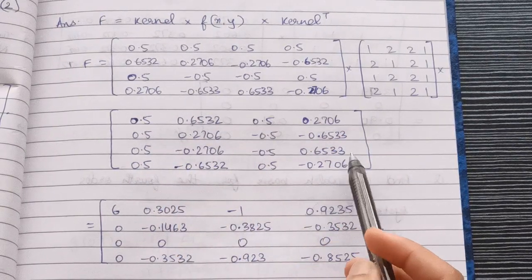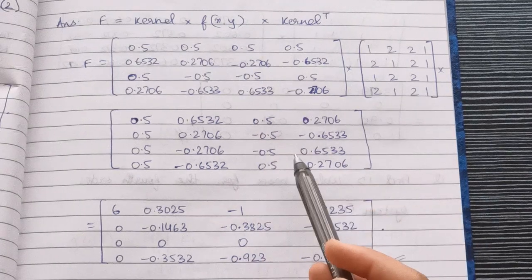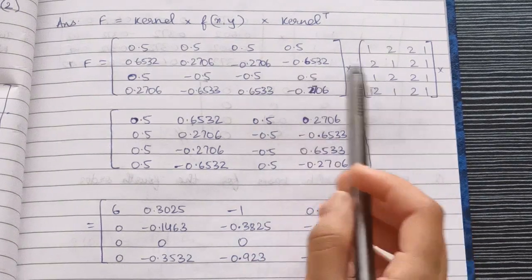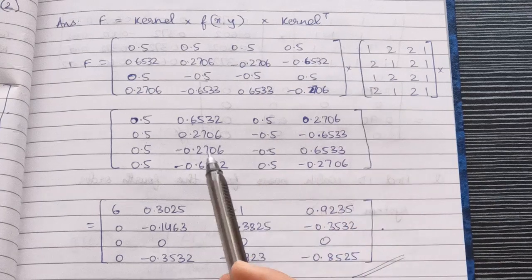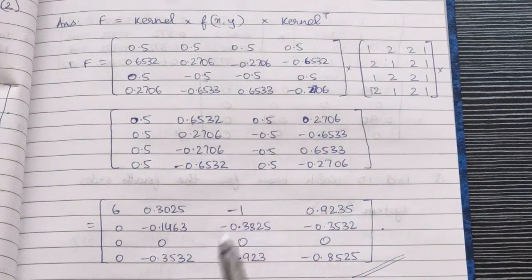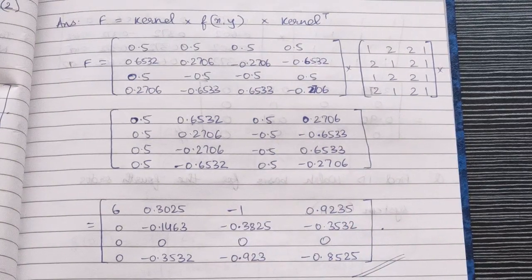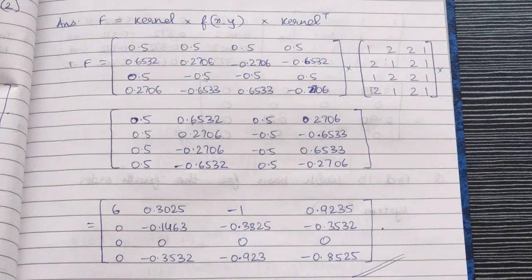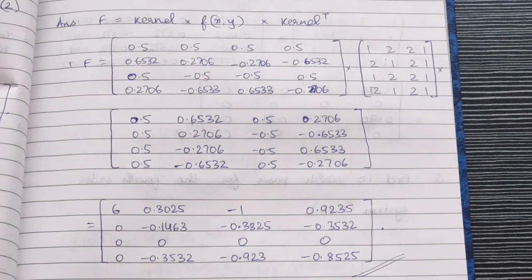When we multiply all of these matrices—first these two, and then that resultant matrix with this matrix—we get this as our final answer. I've already done all the calculations for you. You can try it out on your own.